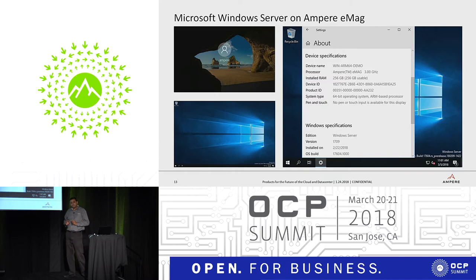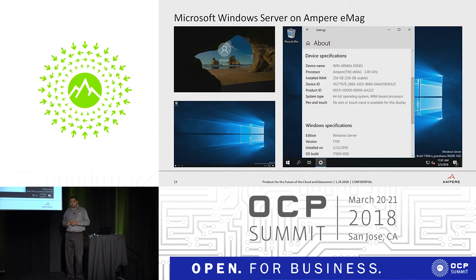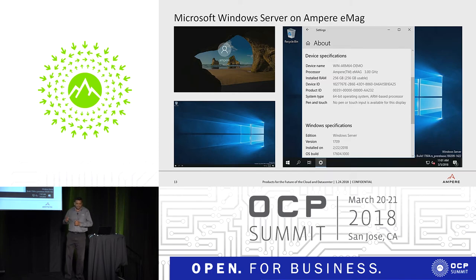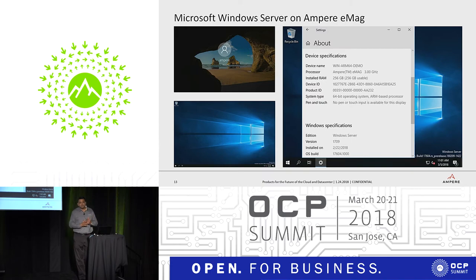We are also showing a Microsoft Windows demo — probably the first time we are coming out with this. It is running native Windows Server on the EMAC platform, booting out of the box. Microsoft has a Connect/Collaborate program by which ARM vendors download and bring it up on their respective hardware. Come over to the booth for a hands-on look at this 64-bit ARM Windows demo.